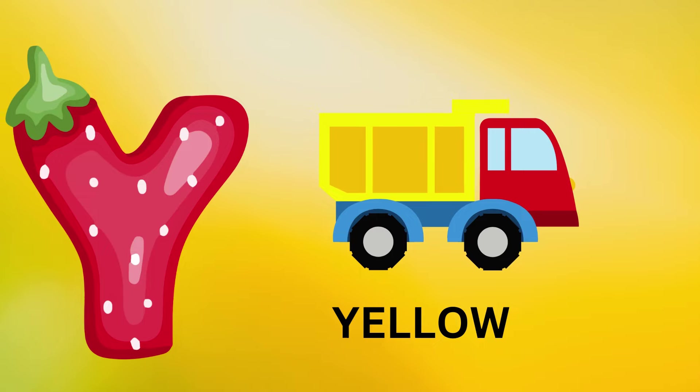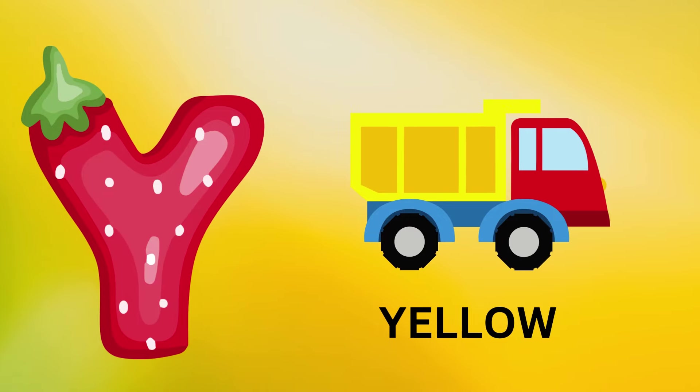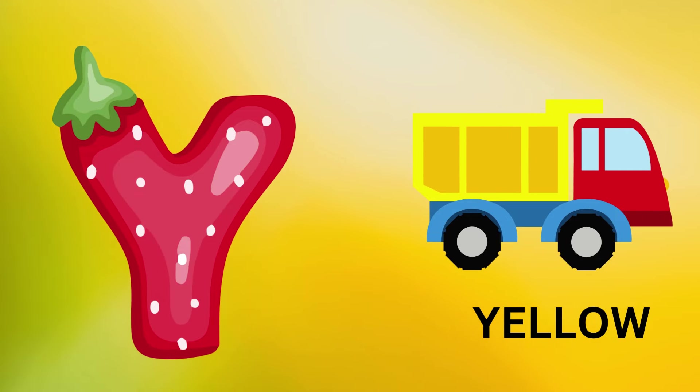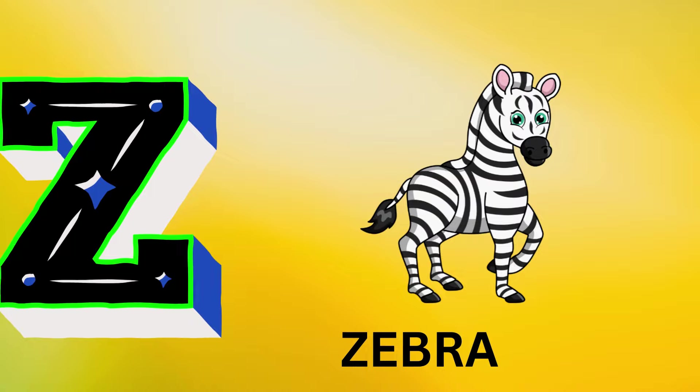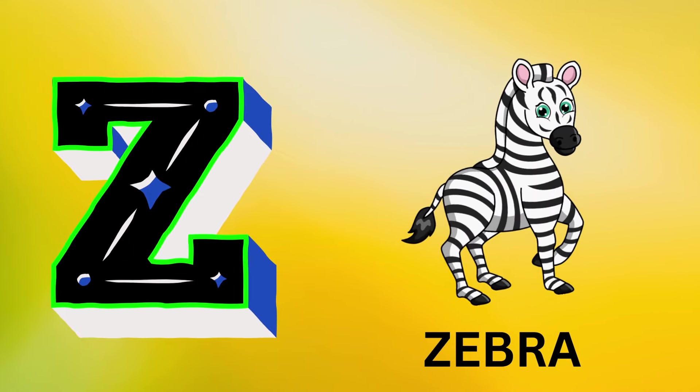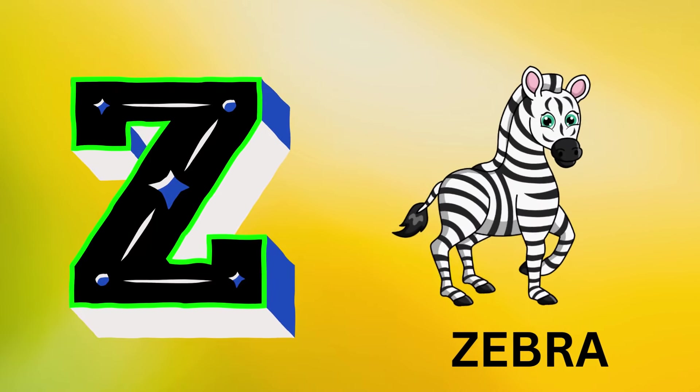Y is for yellow, ye-ye-yellow. Z is for zebra, z-z-zebra.